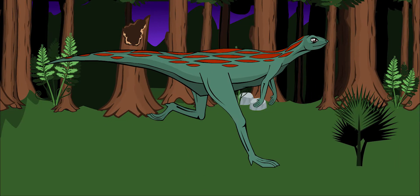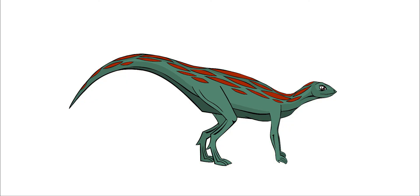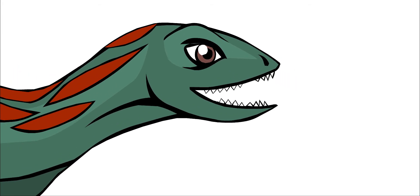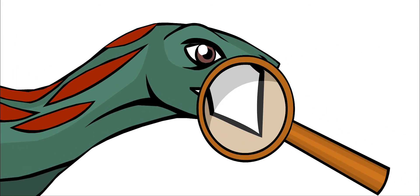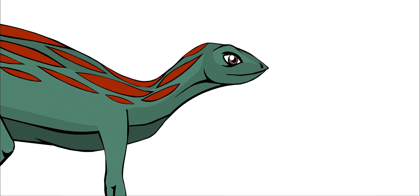Lesotosaurus was an herbivore or a plant-eating dinosaur. It had sharp, pointed teeth at the front of its mouth and teeth with arrow-like spikes in the back. It probably ate tough plant fibers.